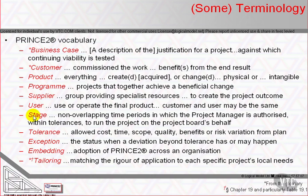Authorization ceases if we step outside of, or suspect we will step outside, the tolerances. Tolerance: the permissible deviation above and below a plan's target for time and cost without escalating the deviation to the next level of management. There may also be tolerance levels for quality, scope, benefit, and risk. Tolerance is applied at project, stage, and team level.